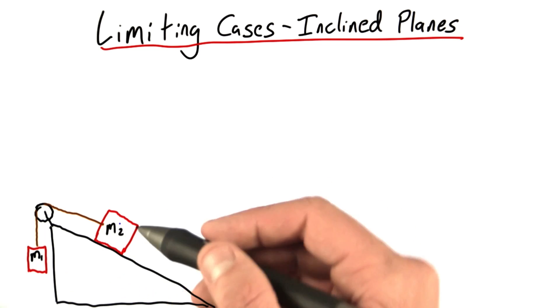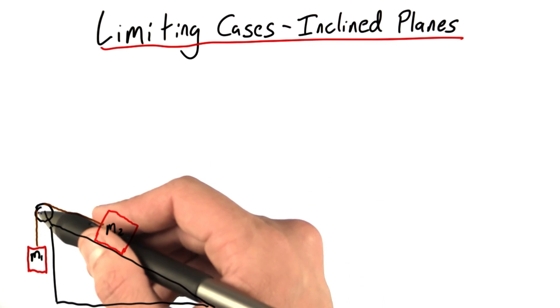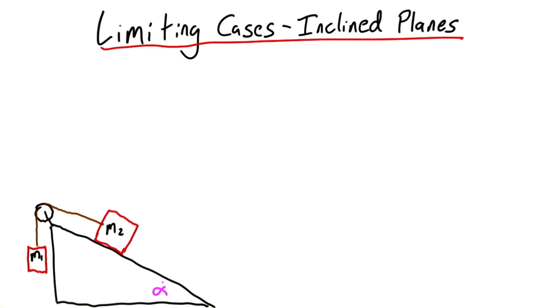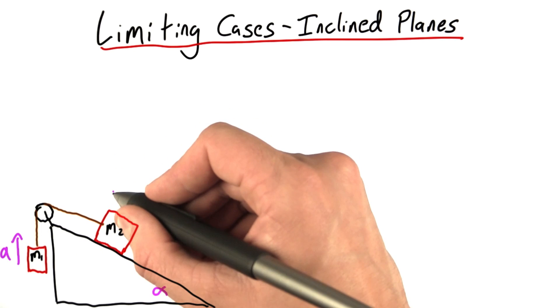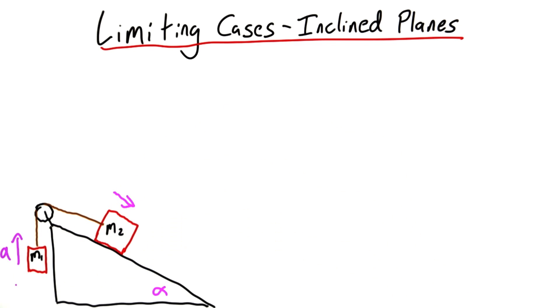This problem involves two masses connected by a string over a pulley. This mass is on a plane which is inclined at some angle alpha. Let's call acceleration positive when this mass goes up and this one goes down and to the right. Goes the other way, acceleration would be negative.